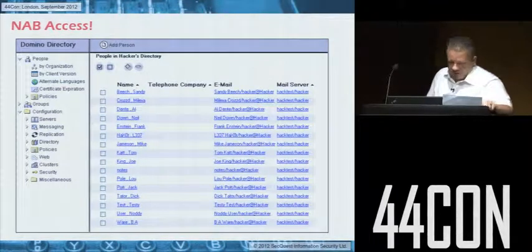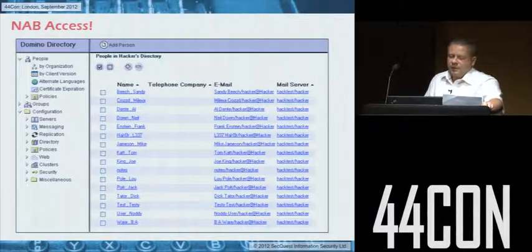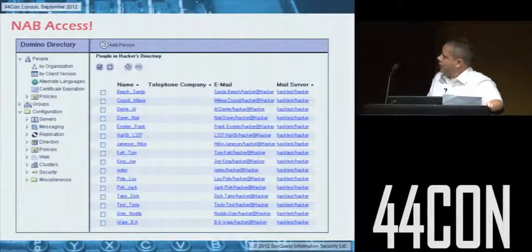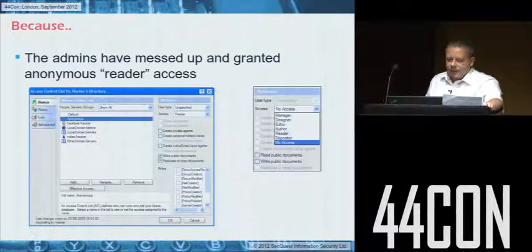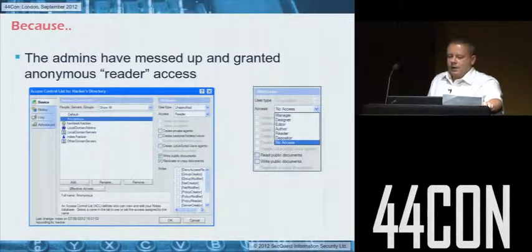On our hacker domain we've got access to the name and address book. You can see down the side you've got configuration values, and this is the main person view showing users in the company. You've got a groups tab which contains your people groups. This is because the admins have messed up and granted anonymous reader access. As I was doing research for this presentation, a friend who works for a big Notes house actually scanned a few of his servers and found that one of the name and address books was open to the Internet on a dev system. It does happen.